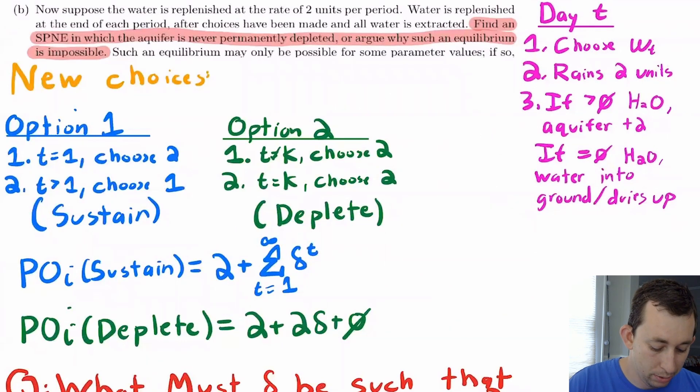So now our two options are we can either sustain the aquifer or deplete the aquifer. What do I mean by sustain and deplete? Well, if I sustain, basically, what I can do is I can choose two units of water today, and then just one unit for the rest of my life. Because if I choose one for the rest of my life, basically what's going to happen is the aquifer is going to be at two after I take out water. And after Debra also takes out water, it's going to rain two units. Option two is deplete, where basically, we choose two units of water each in both periods, the aquifer becomes permanently depleted after two turns, and then we get zero for the rest of the time.